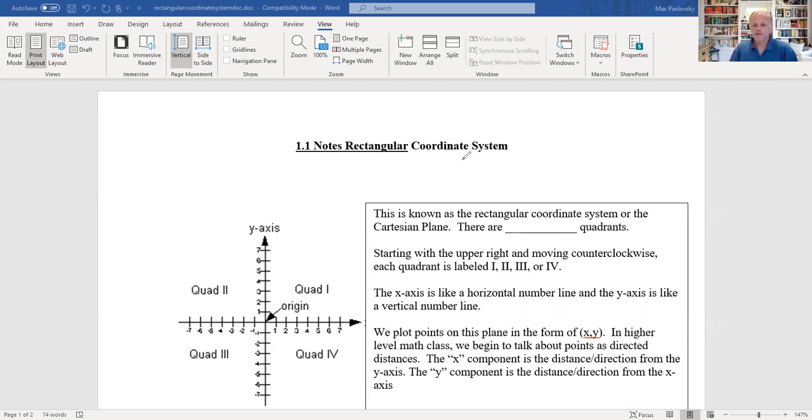Just to review the rectangular coordinate system. It's also called the Cartesian plane and there are four quadrants. Starting with the upper right, that's going to be quadrant one, and then we go counterclockwise - quadrants two, three and four. So we've got the horizontal number line going this way, that's called the x-axis, and then the vertical, it's called the y-axis.